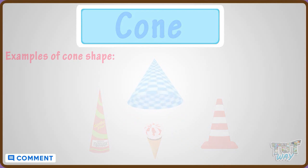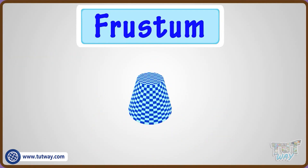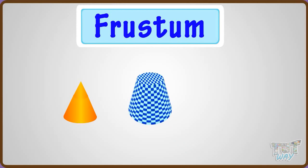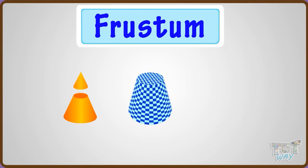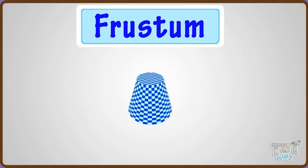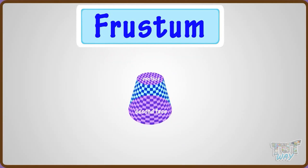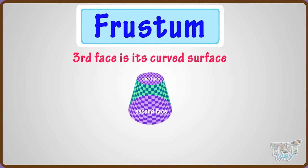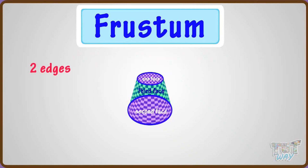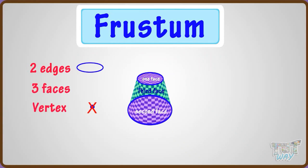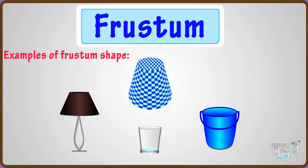Now let's learn another shape — Frustum. A frustum is a 3D shape which is the part of a conical solid left after cutting off its top portion. It has three faces: two round faces, one at the top and one at the bottom, and the third face is its curved surface. It has two edges which are round in shape, three faces, and no vertex. These are a few objects that are frustum in shape.